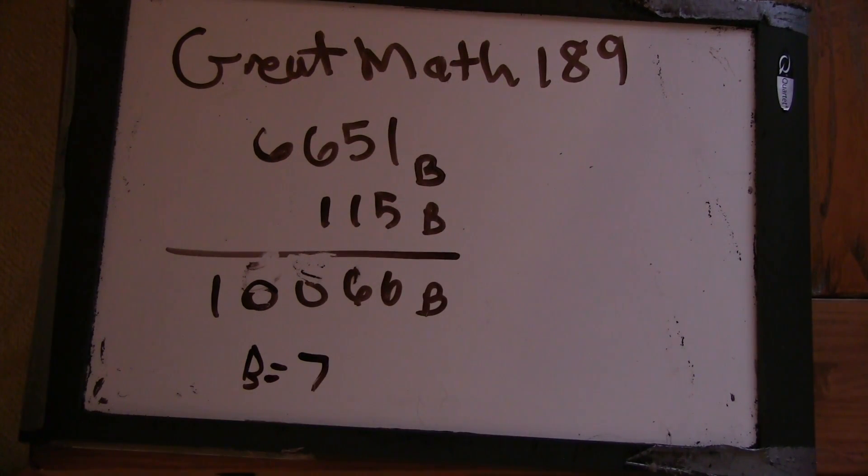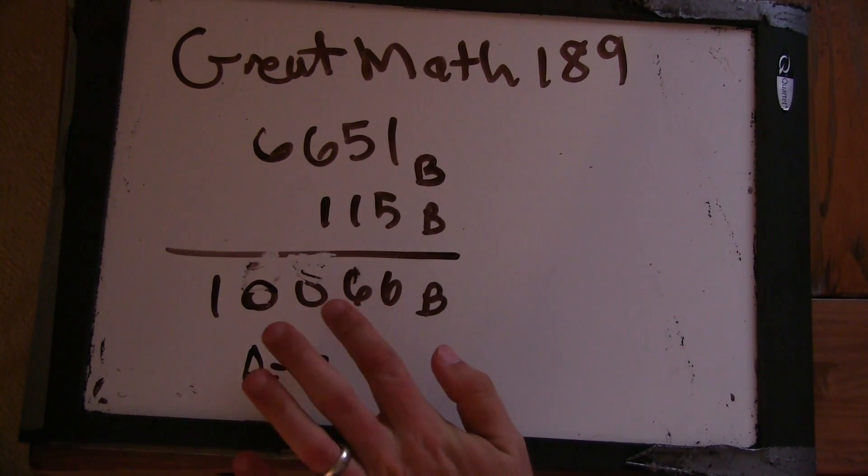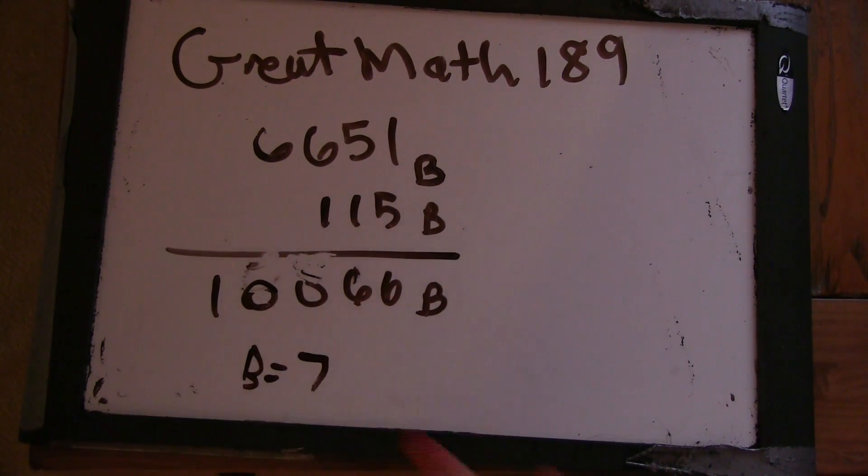Okay. So it's a little tough to check this one, because we would have to go out to the 7 to the 0, 7 to the 1, 7 squared, 7 cubed, 7 to the 4. Yeah. So, but I think you're right. I think B is 7.